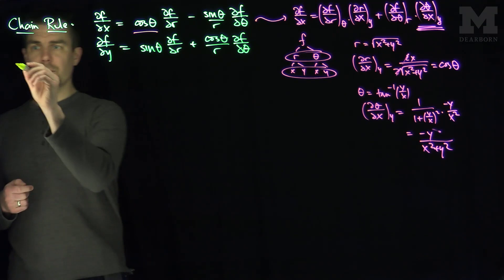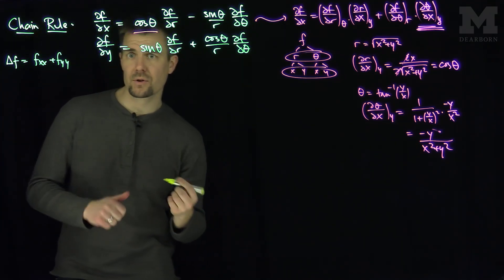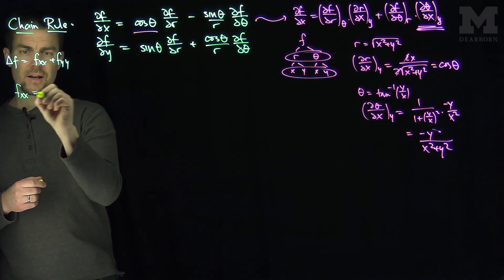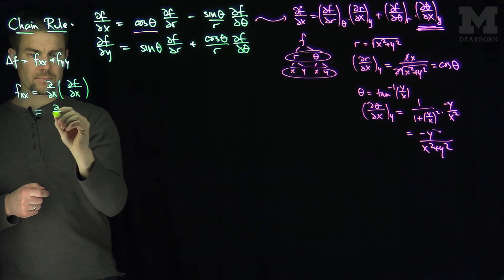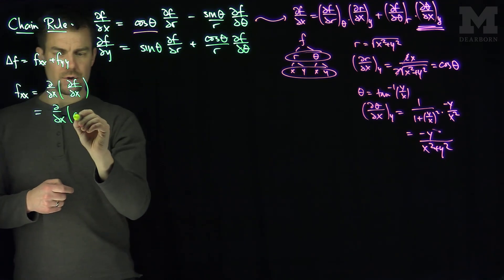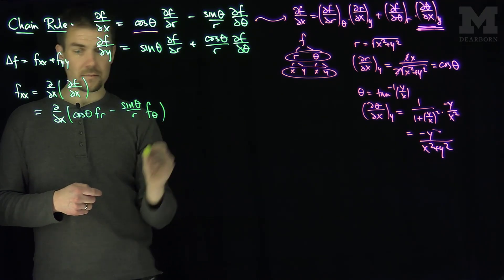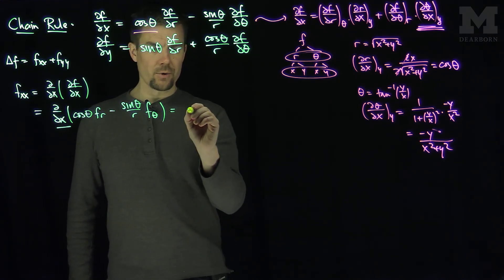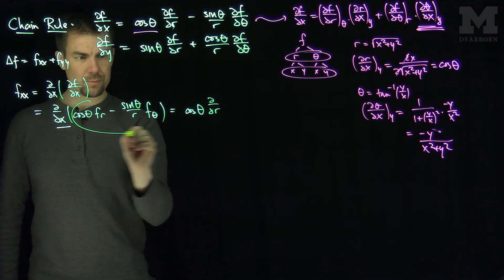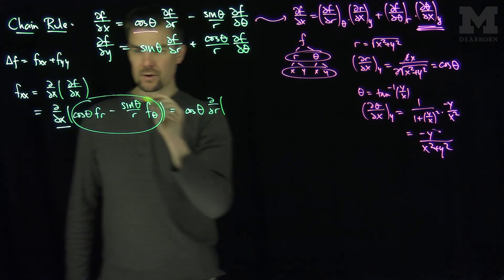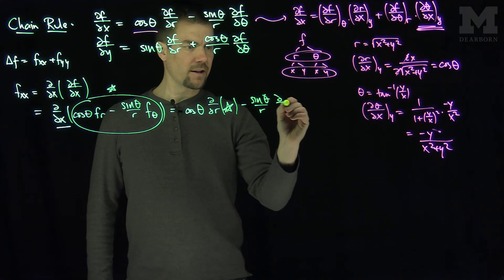To find the Laplacian in polar coordinates we need fxx + fyy. For fxx, that's the x-derivative of the x-derivative. We know ∂f/∂x = cosθ · fr − (sinθ/r) · fθ. Call this expression star. We apply the x-derivative operator again: cosθ times an r-derivative of star, minus (sinθ/r) times a θ-derivative of star.